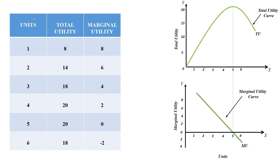The second chapati gives total utility of fourteen — that is eight plus six. The third chapati gives four units of marginal utility, so fourteen plus four equals eighteen total. The fourth chapati gives only two units of satisfaction, so eighteen plus two is twenty. The fifth chapati gives zero satisfaction, so twenty plus zero is twenty. When consuming the sixth chapati, marginal utility is minus two, so twenty minus two is eighteen.